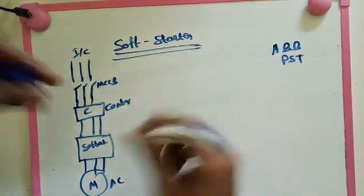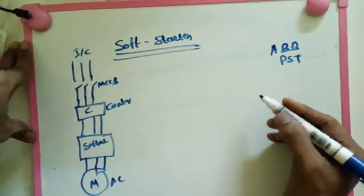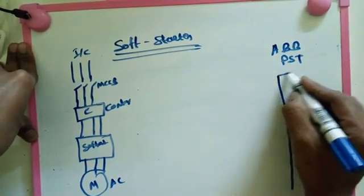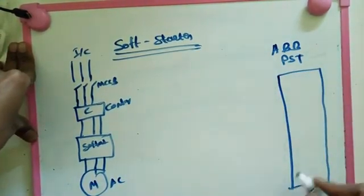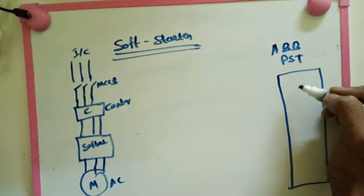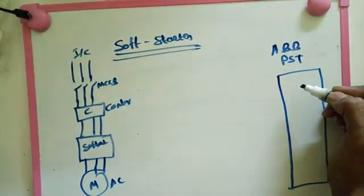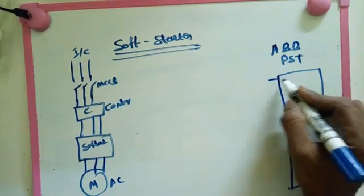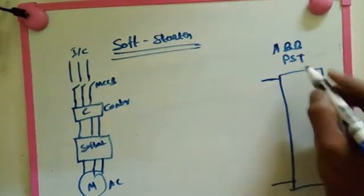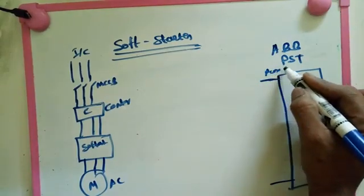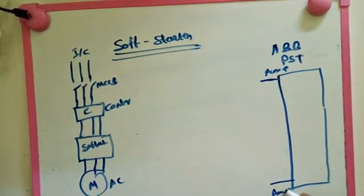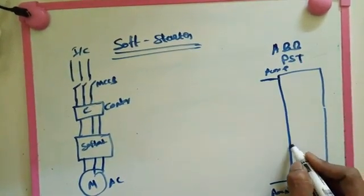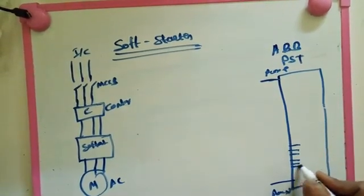After that we make the control drawing of soft starter. Before that I'm terminating all the terminals of soft starter here. ABB VST has some more key terminals for controlling purpose. First of all we're giving auxiliary supply, AUX supply phase and AUX supply neutral. After that we have 3 relays here.